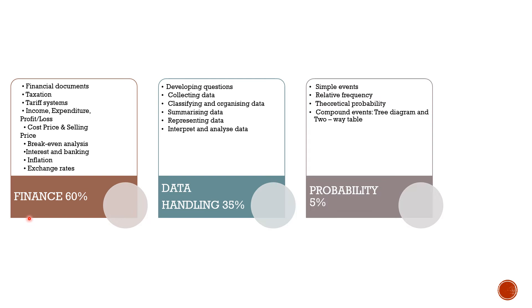Under Finance, the various sections covered are: financial documents, taxation, tariff systems, income, expenditure, profit and loss, cost price and selling price, break-even analysis, interest and banking, inflation, and exchange rates.